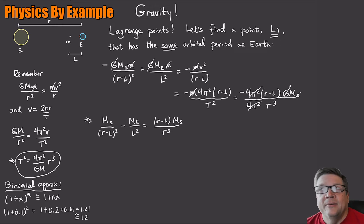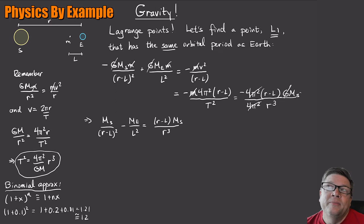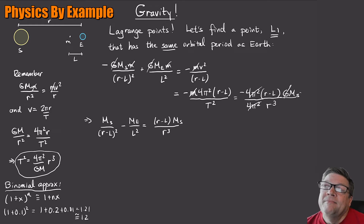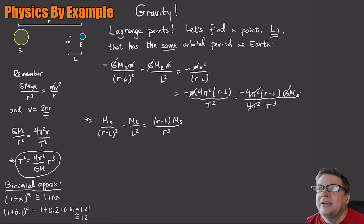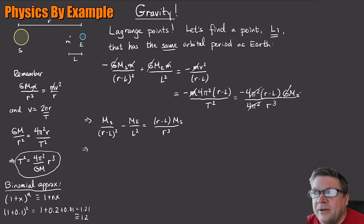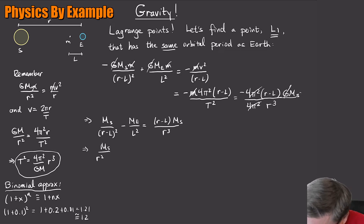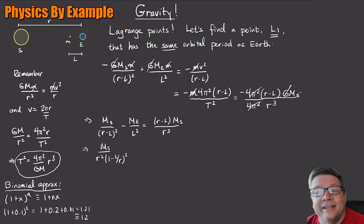I'm going to assume — and it will turn out to be right — that point m is way closer to the Earth than to the Sun. That makes sense because the Sun is 300,000 times more massive, so the balance point will be close to Earth. Since R is much larger than l, l over R is a small quantity. Looking at the first term, I can factor out R² from (R − l)² to write M_S over R² times (1 − l/R)^(−2).